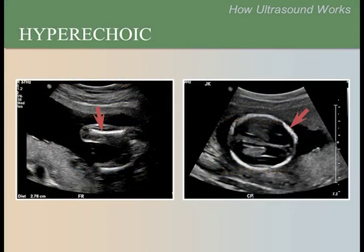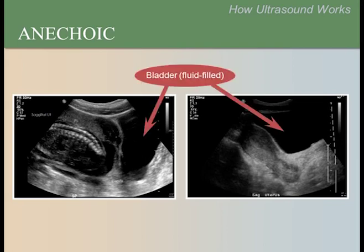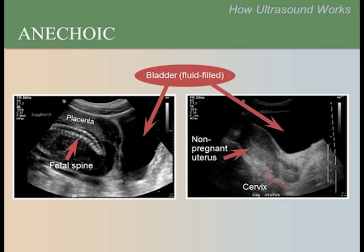These are different views of the fetus. Hyperechoic structures are white — in these images, they are the skull and femur. Anechoic means there is no echo, so it will appear black. In these two images, the anechoic structures are the bladder, which is fluid-filled. Other structures to note include the hyperechoic fetal spine on the left and the hypoechoic or gray-colored placenta on the left and the uterus and cervix on the right.